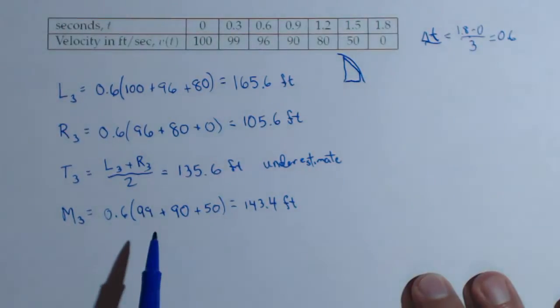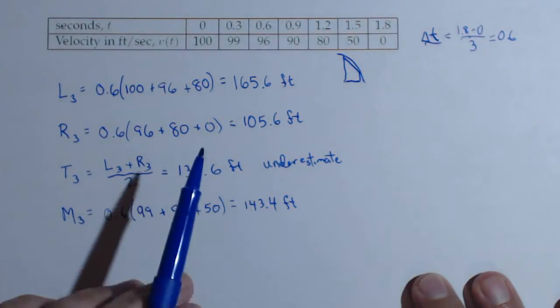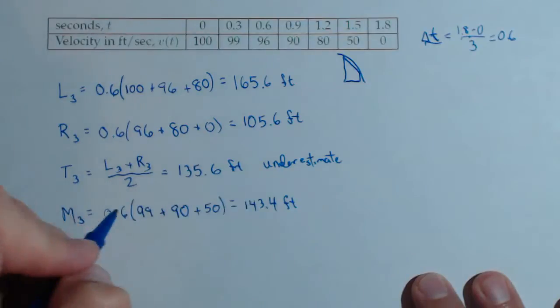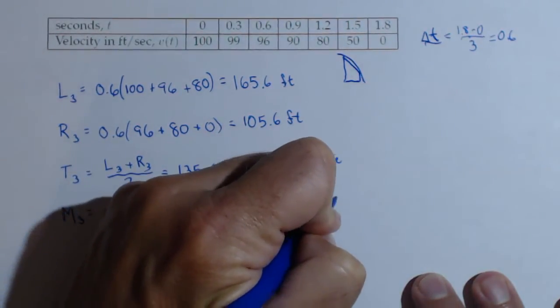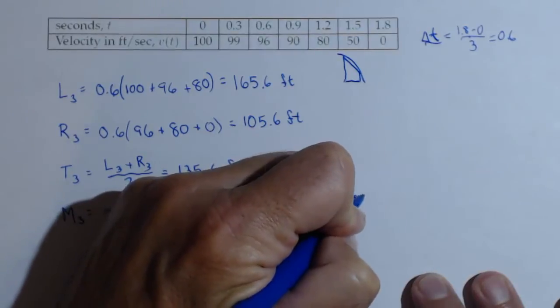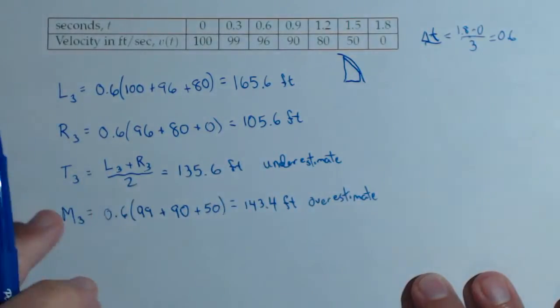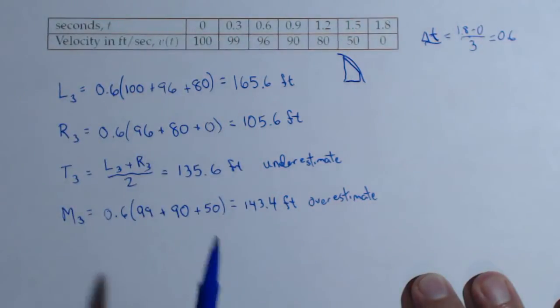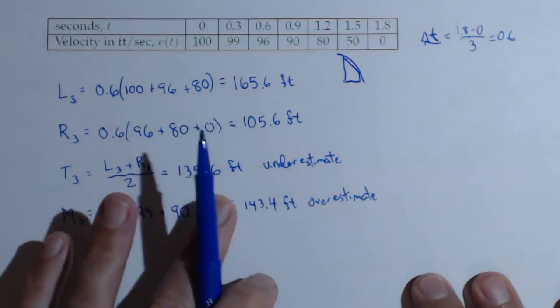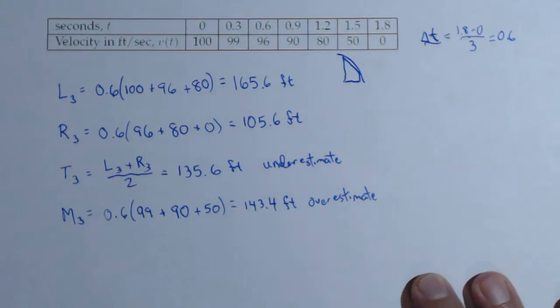Now, we know that the midpoint rule is more accurate than the trapezoid rule by looking at the errors. And we also know that when it's concave down, the midpoint rule is going to give us an overestimate. So we now have an upper bound and a lower bound on our distance traveled. That's a lot better than what our left and our right hand rule was giving us. We know this object traveled somewhere in between 135.6 and 143.4 feet.